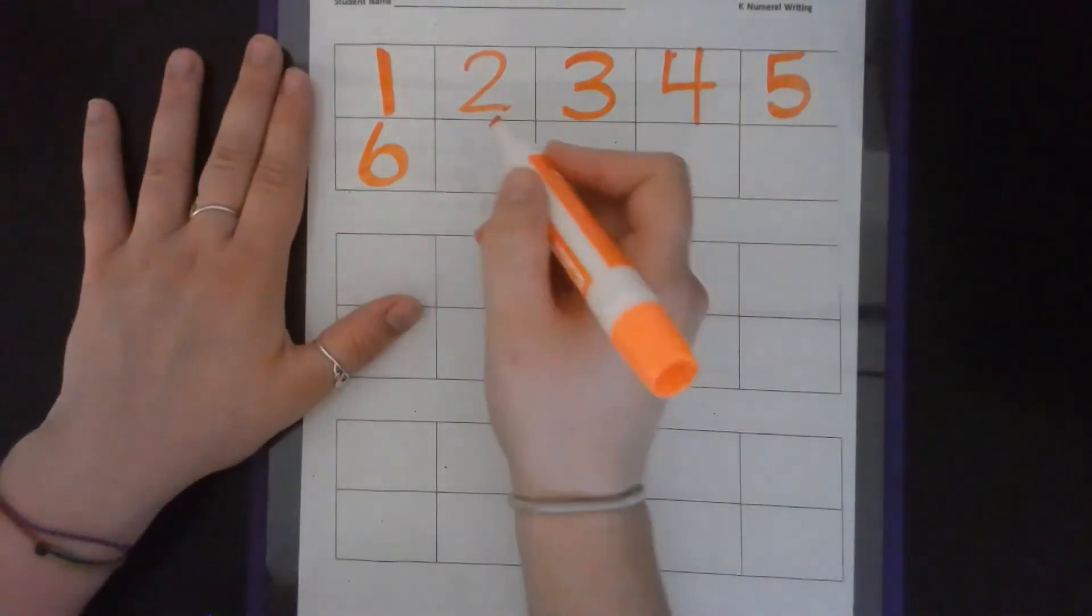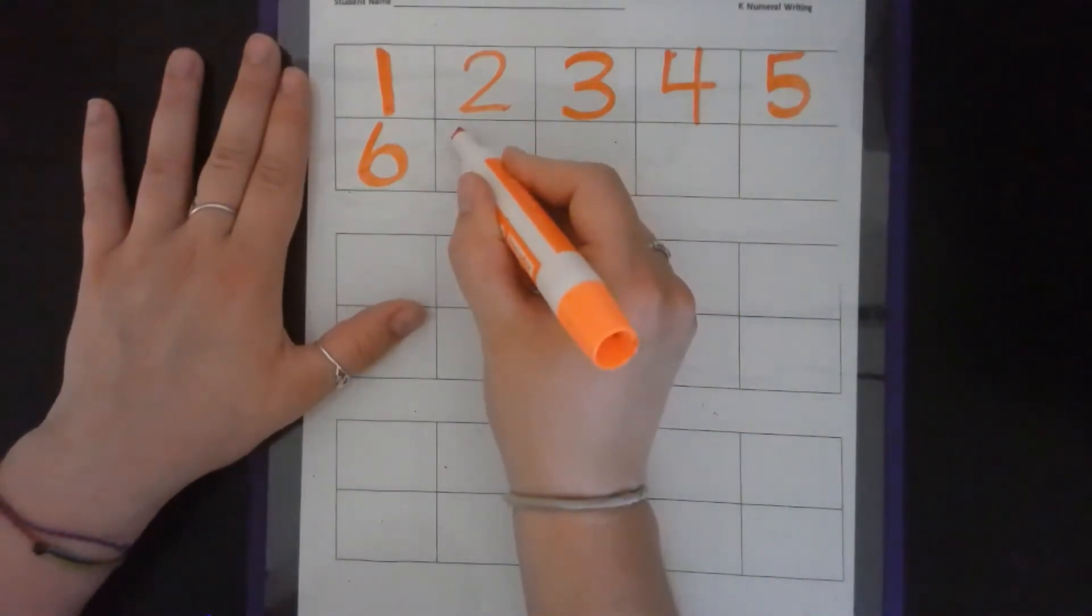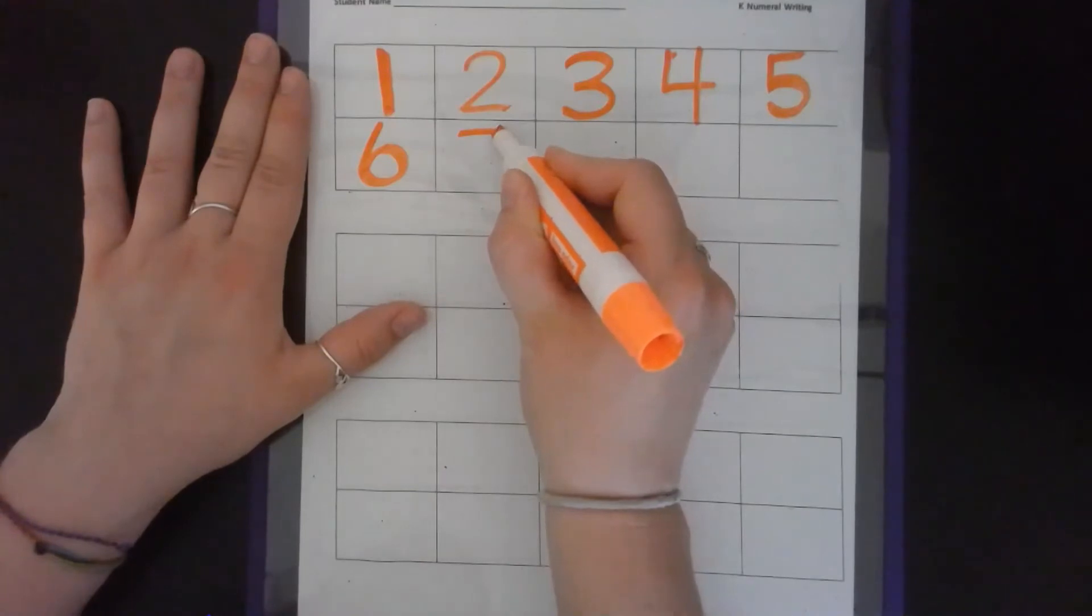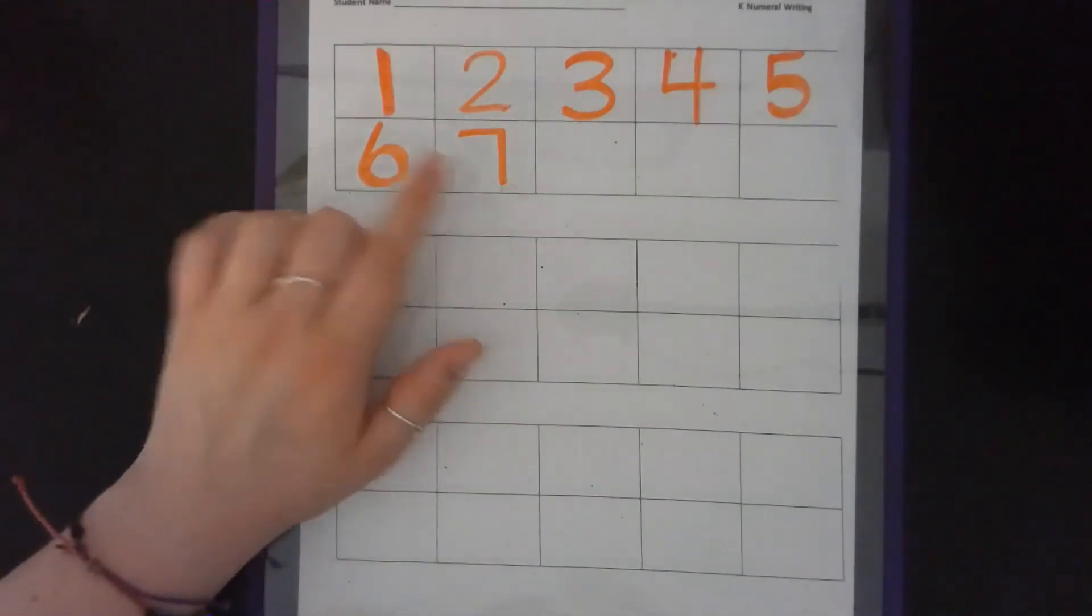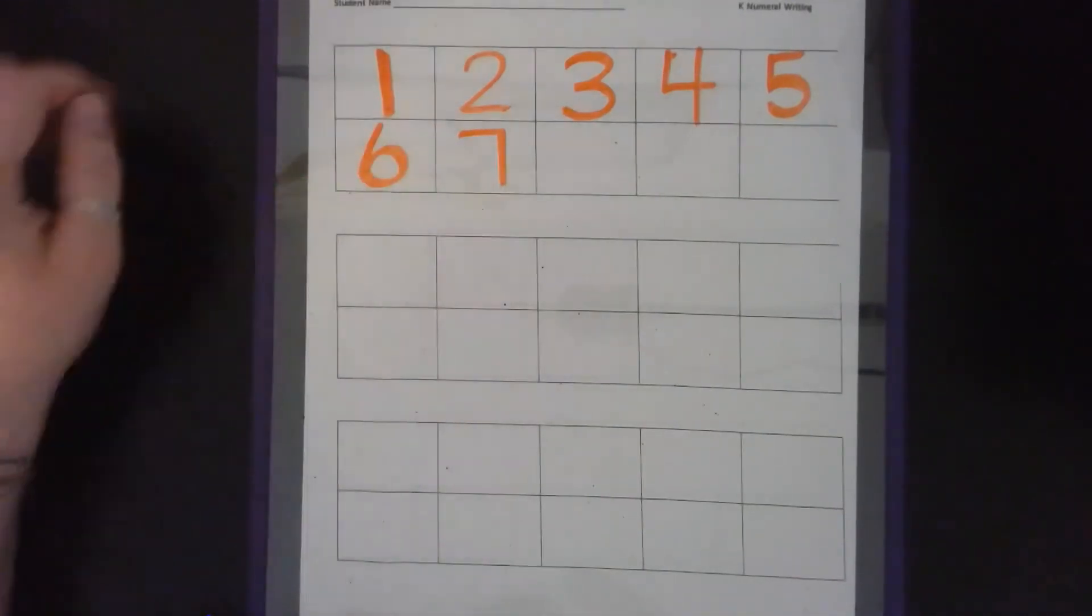Next number is seven. And that's line across, down from heaven. That's the way we make a seven. Pretty simple. Kind of looks like our one, just with a little hat on top.